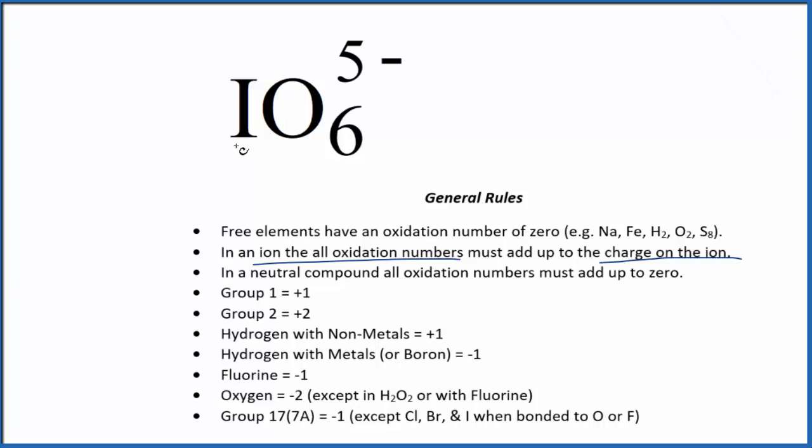We don't have a rule for iodine here. That's really the one we're trying to figure out. But we do know that oxygen is minus 2. So let's call iodine X. We have our negative 2 for oxygen, and that's for each oxygen. We have 6 of them. So we can just set an equation up.